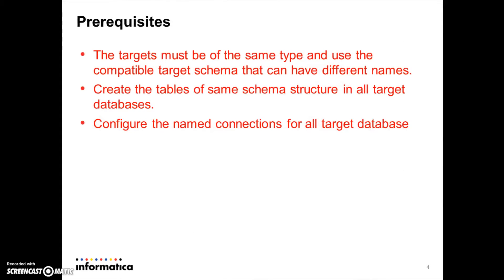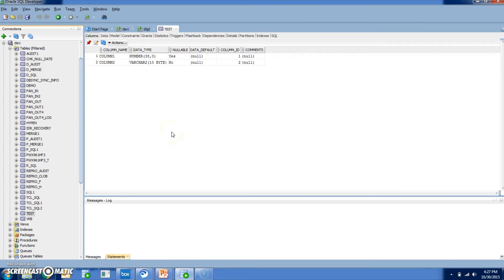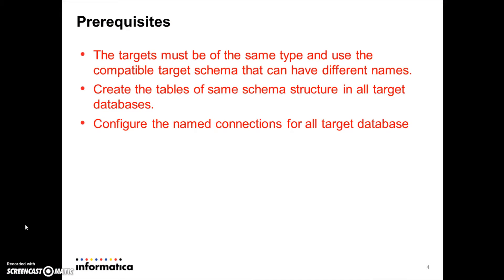Pre-requisites for fanout: the targets will be of the same type and use a compatible target schema that can have different names. Create the tables of the same schema structure in all the target databases. I have a source table named 'test' with two columns — one with integer data type and another with varchar. I have created tables of the same schema structure in the target databases as well.